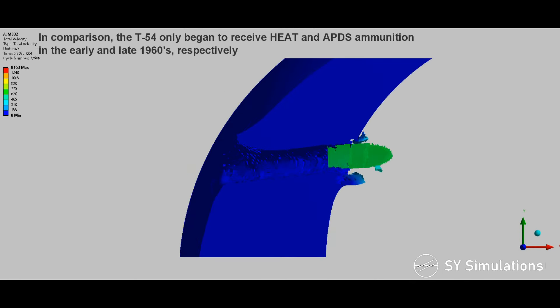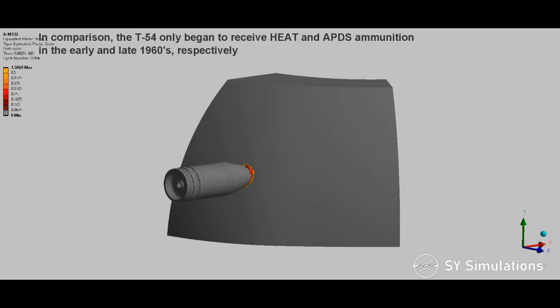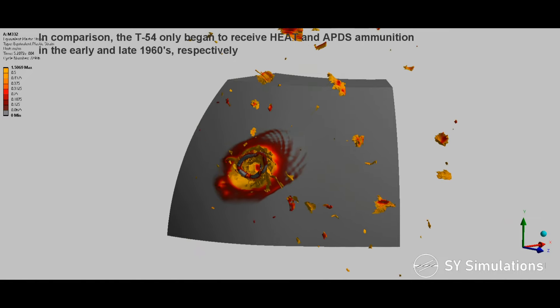In comparison, the T-54 only began to receive HEAT and armor-piercing discarding sabot ammunition in the early and late 1960s respectively.